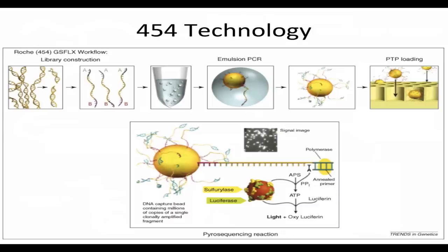Pyrosequencing is the chemistry of flowing nucleotides across — a technology licensed by 454 from another company that had developed it for sequencing very short stretches, like primer extension reactions to detect single nucleotide variants. It had the same homopolymer problem, but 454 used it because they were so excited about the concept of massively parallel sequencing that they didn't want to spend another five to ten years in R&D inventing a completely new sequencing chemistry.